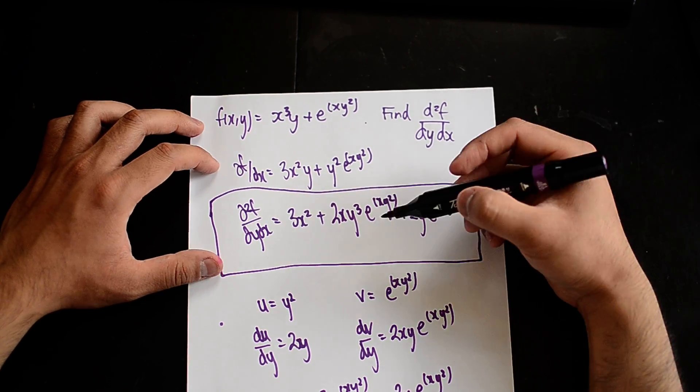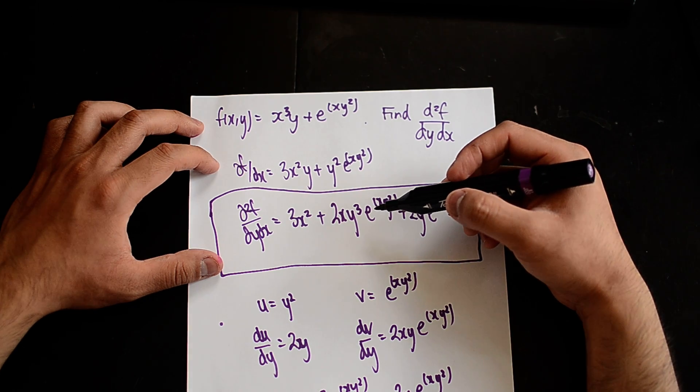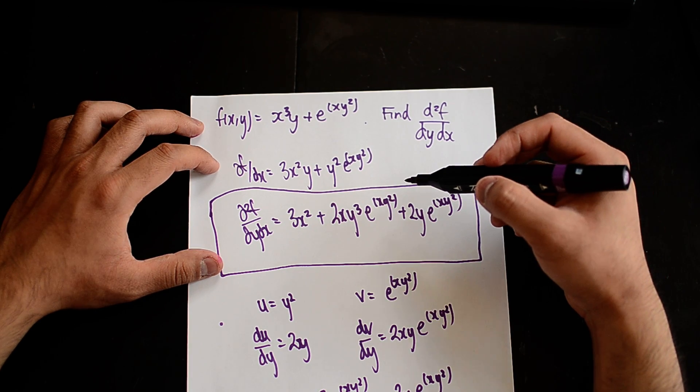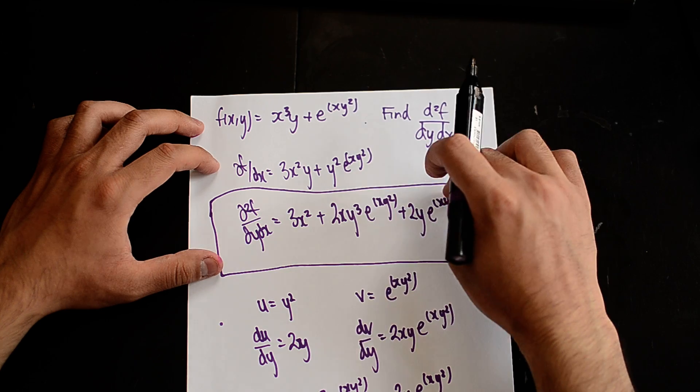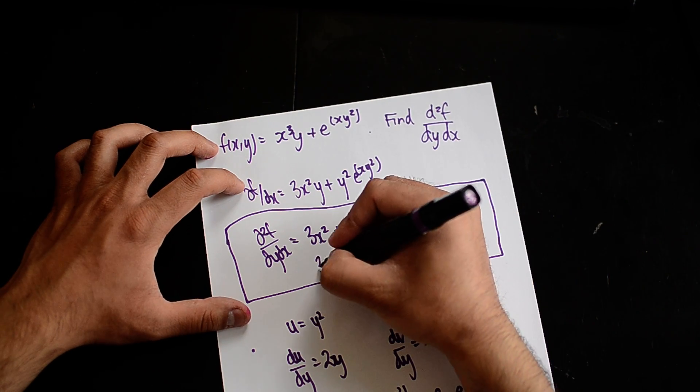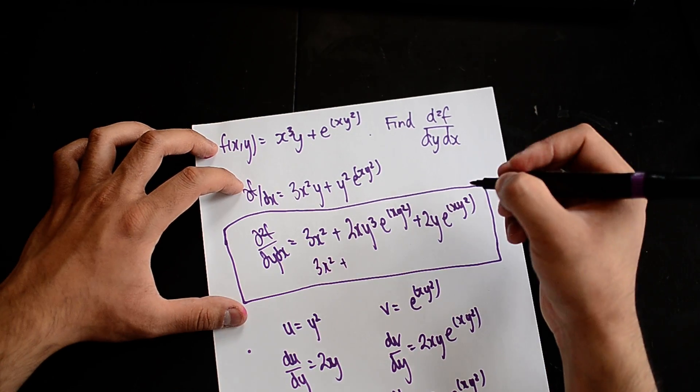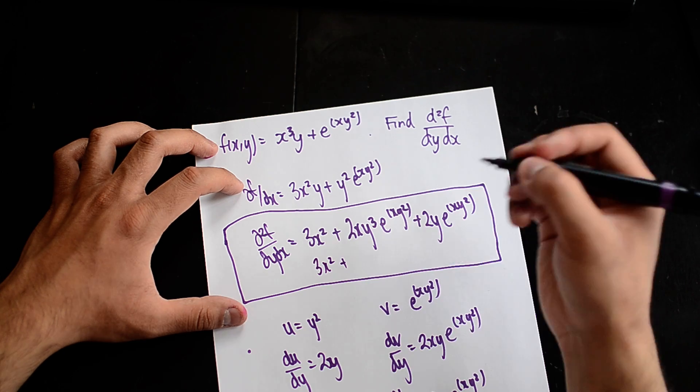And that is my answer. I can simplify this out a little bit, perhaps using this side you can kind of go 3x² and maybe take out 2, take out a y.